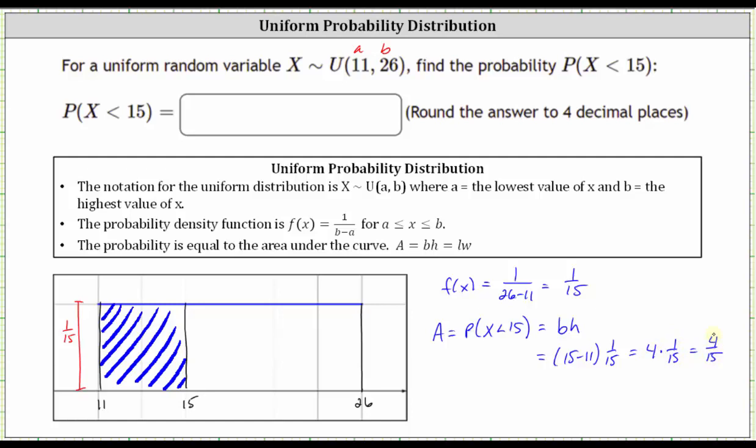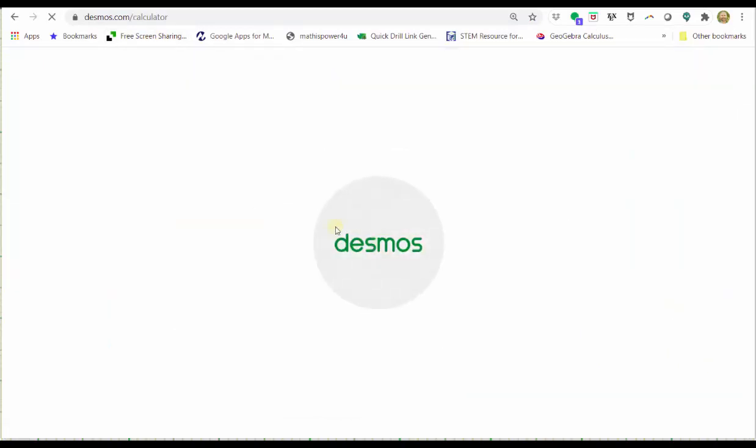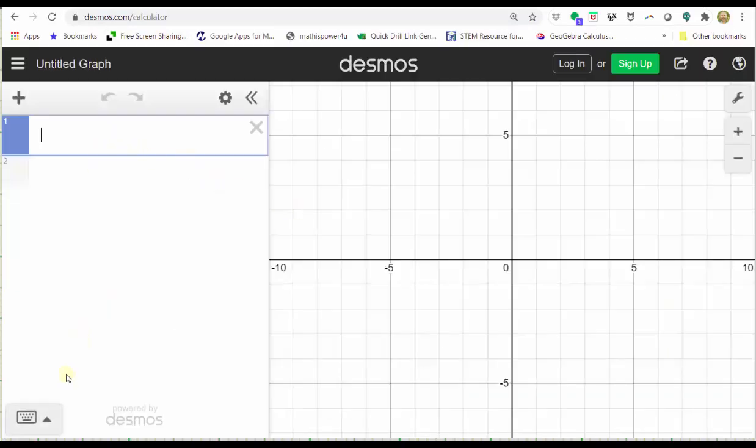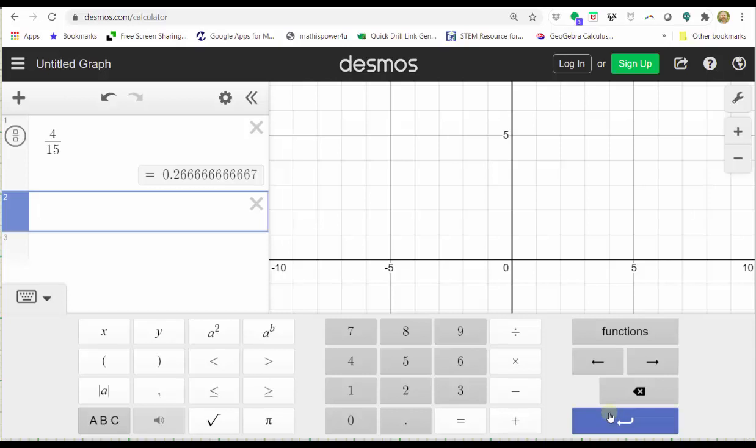But this question asks for a decimal to four decimal places. So let's divide 4 by 15 using Desmos. At Desmos.com, click Graphing Calculator. In cell one, we enter 4 divided by 15. To four decimal places, we have 0.2667 rounding up.